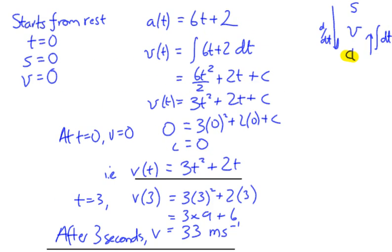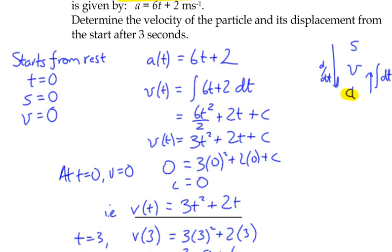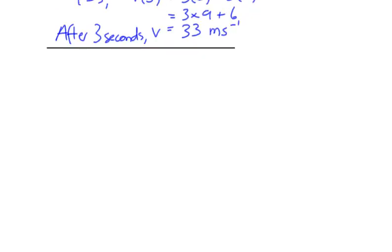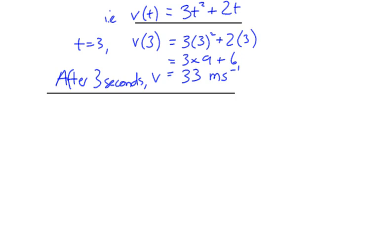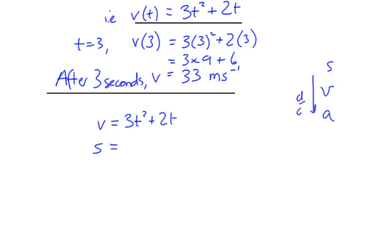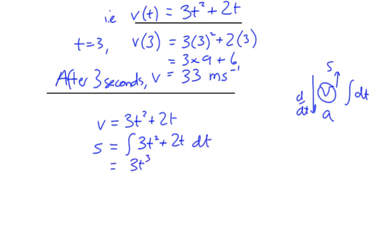We've got a second part — we also need to determine the displacement from the start. We know the velocity is 3t squared plus 2t, and we want displacement. Using the relationship between s, v, and a — integrate to move from velocity to displacement. So we integrate 3t squared plus 2t with respect to t, and we end up with t cubed plus t squared plus C.